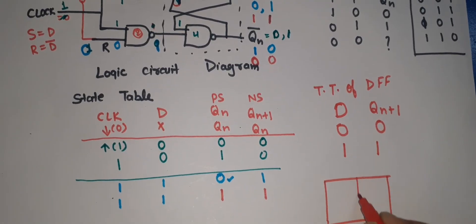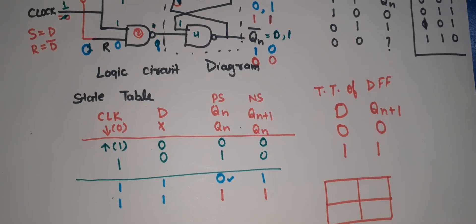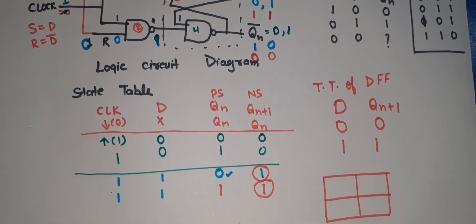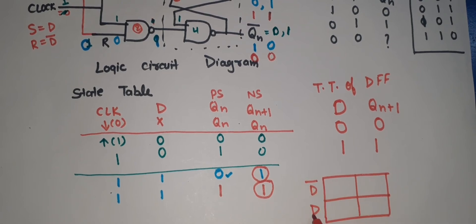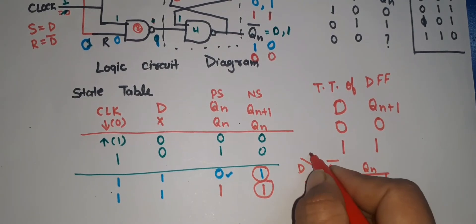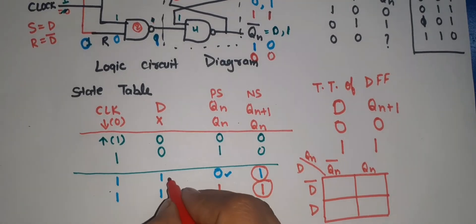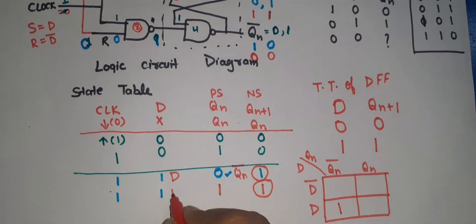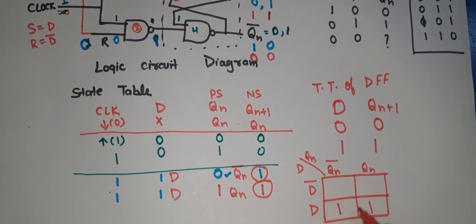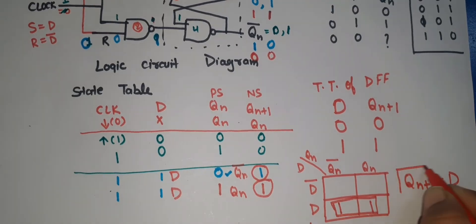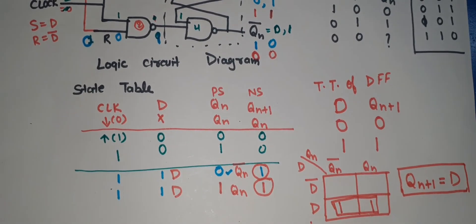We draw the Karnaugh map for Qn+1. The output is one in the case where D is one. The axes are D and Qn (and Qn-bar). The pair formed gives us that Qn+1 equals D. This is the characteristic equation of the D flip-flop.